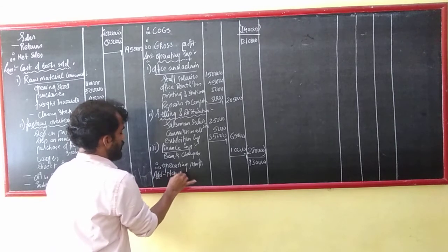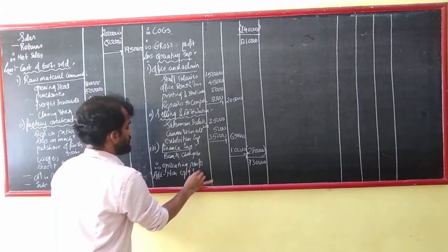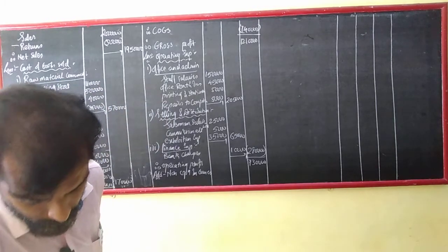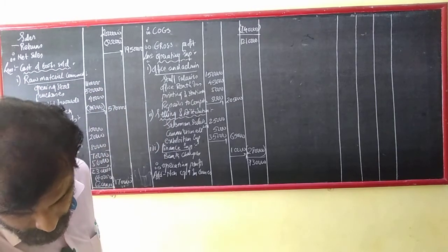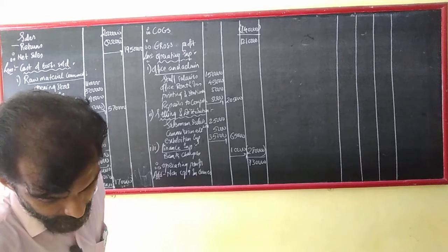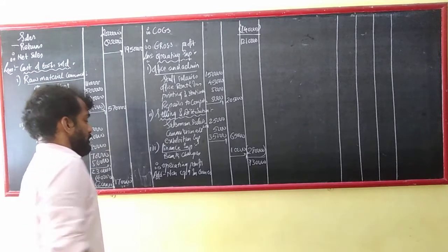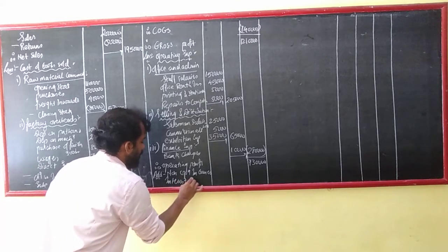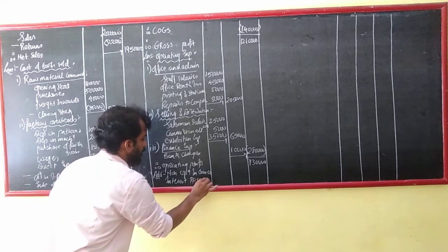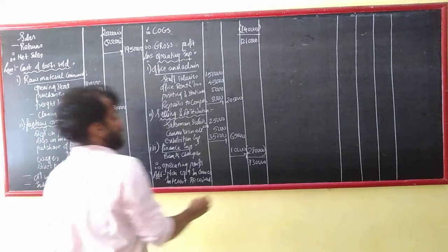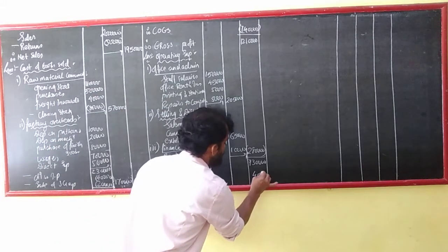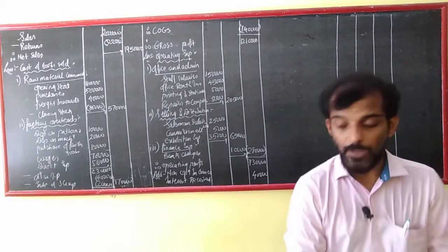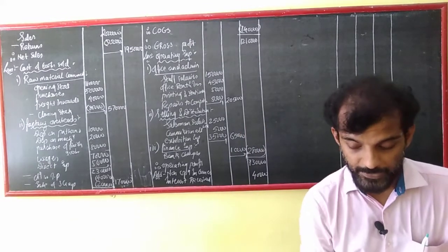Now, non-operating income and expenses. Do I have any non-operating income? Yes — interest received. So interest received: 40,000. That means 9,30,000 plus 40,000 equals 9,70,000.